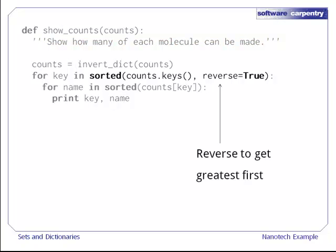Next, we get the keys from the inverted dictionary, i.e. the counts of how many molecules we can make, and sort them. Notice that we pass in reverse equals true to sort in descending order, i.e. with the greatest values first. We've also sorted the molecule names just to be tidy.